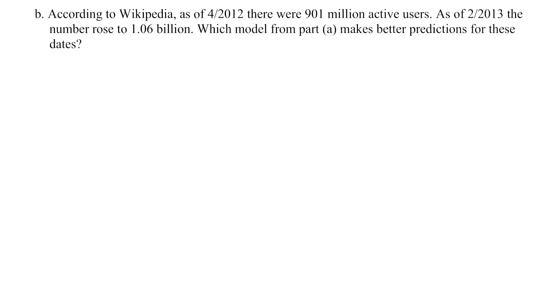According to Wikipedia, as of 2012 there were 901 million active users, and as of 2013 the number rose to 1.06 billion. Which model from part A makes better predictions for these dates? So let's recall our model. Our linear model was Y equals 150X plus 150. Our exponential model is Y equals 150 times 2 to the X power.